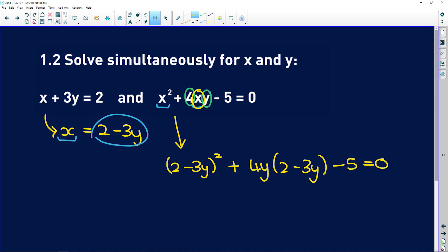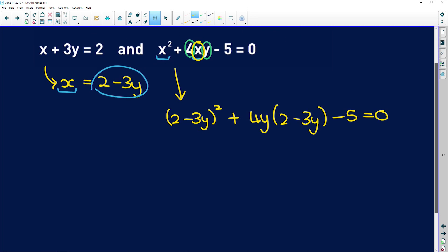And now all you have to do is multiply out and simplify. So 2 squared is 4, minus twice the product of these two is going to give me minus 2 times 3 is 6 times 2 is 12, plus 9y squared. Now for the second bracket, 2 times 4y is 8y, and 4 times negative 3 is negative 12y squared minus 5 is equal to 0.